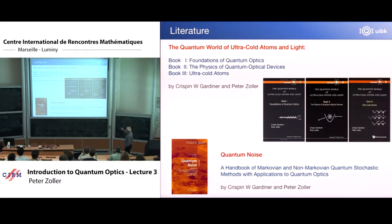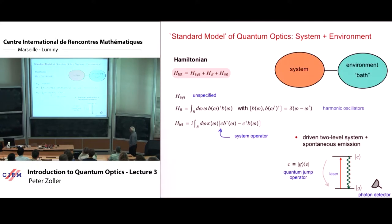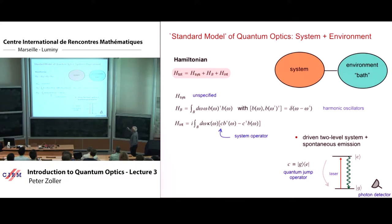Let's start with the toy model of quantum optics — the system coupled to the environment. To simplify the discussion, always think of the system as a two-level system, because it allows intuition and makes writing things down much more obvious without much overhead.